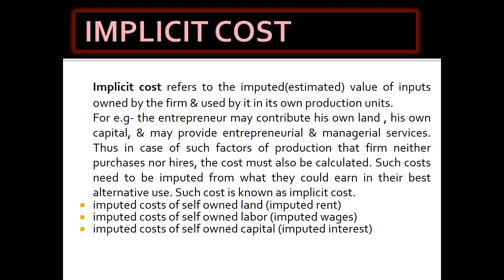Similarly, if I am looking after that particular shop, I am sacrificing the alternative opportunity cost — I could be working elsewhere and earning, let's say, 60,000 rupees per month. These costs — imputed rent, imputed interest, imputed wages — would not reflect on the balance sheet because we are not actually paying for these services. That is why this cost is called imputed cost or implicit cost.